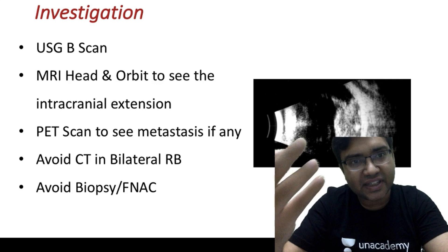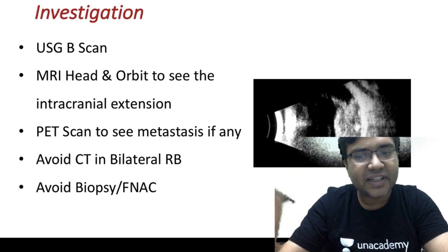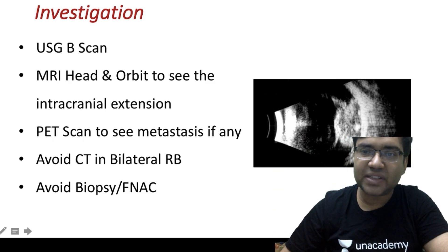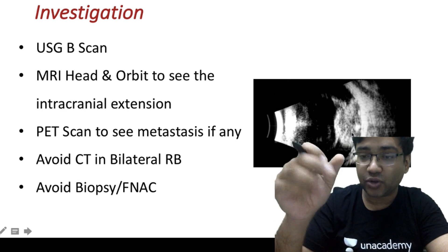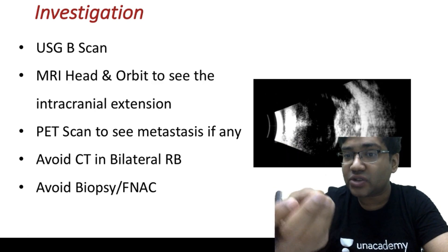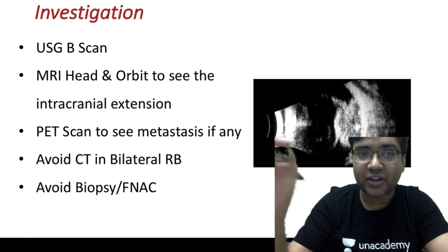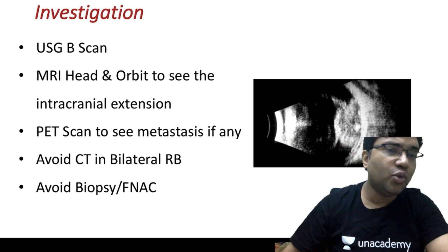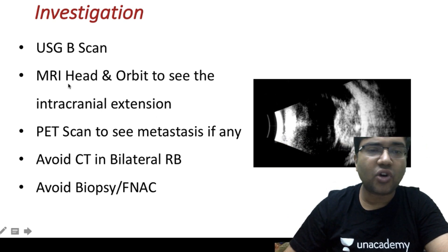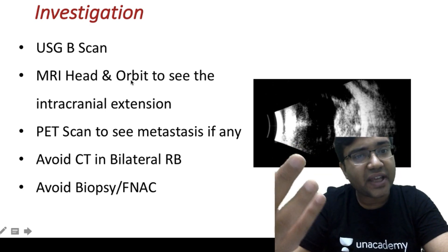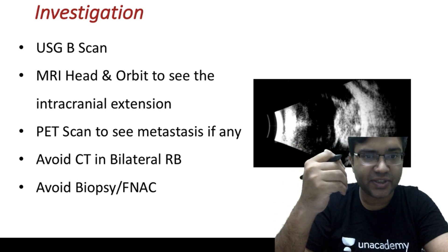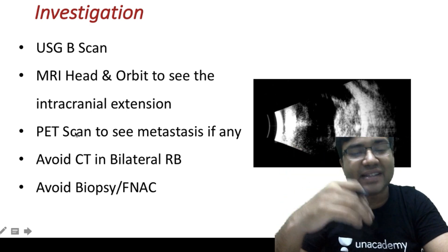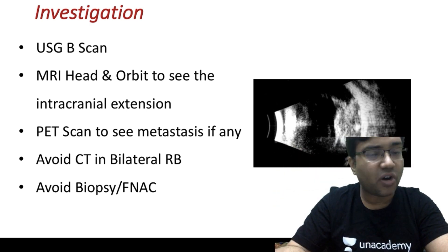To investigate a patient of retinoblastoma, you perform an ultrasound B-scan, which shows a mass lesion and may show characteristic calcification. To assess optic nerve extension, do an MRI of the head and orbit, with gadolinium contrast. If metastasis is suspected, do a PET scan. Remember: avoid CT and biopsy in cases of retinoblastoma.